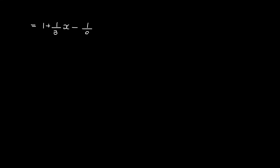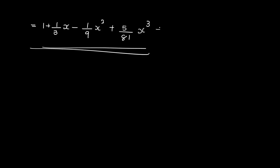So the final result is: (1+x)^(1/3) = 1 + (1/3)x − (1/9)x² + (5/81)x³ + ...